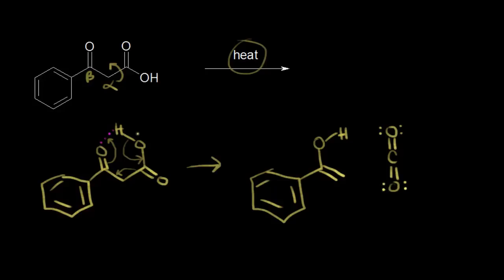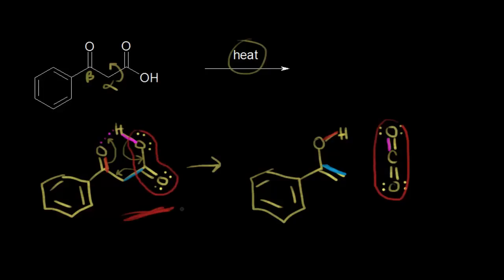Let me draw in the lone pairs of electrons on our oxygens so we can see where the CO2 comes from. These electrons in magenta are going to move in here to form the double bond on CO2. At the same time, these electrons in here are going to move into here to form this double bond, and finally these electrons are going to move out to form the bond between the oxygen and the hydrogen. So we've made our CO2 — the oxygen-carbon-oxygen comes from this oxygen-carbon-oxygen on the left side of the molecule.